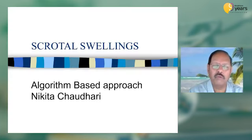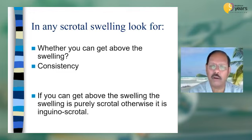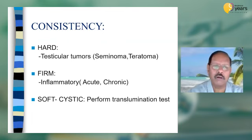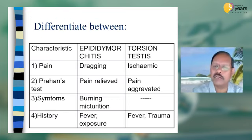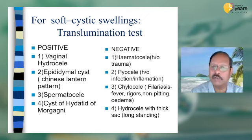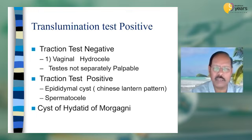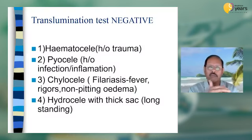The same algorithmic approach can be done for scrotal swellings. First, we find out whether you can get above the swelling — if yes, it is a scrotal swelling; if not, it is an inguino-scrotal swelling. Then by consistency: if hard, it is a malignancy; if firm, it could be acute infection such as epididymo-orchitis, distinguishable from torsion testis; if soft and cystic, we do transillumination. If transillumination is negative, it is haematocele, pyocele, or chylocele. If positive, it is vaginal hydrocele. The retraction test — if you can pull it down, it is hydrocele; if not, it is epididymo-orchitis.